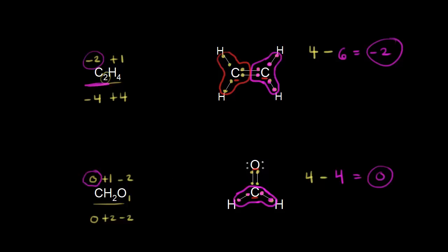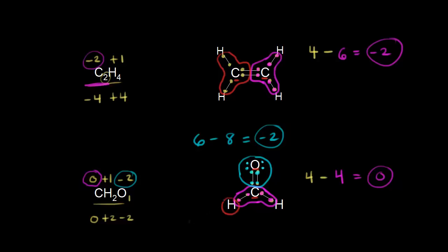Let's also verify oxygen's oxidation state. Oxygen should have six valence electrons because of its position on the periodic table. After accounting for electronegativity, oxygen is surrounded by eight electrons. So six minus eight gives an oxidation state of minus two for oxygen. For hydrogen: hydrogen should have one valence electron, but there are zero electrons around it because carbon is more electronegative, so one minus zero gives plus one — confirming our predictions. This formula works for other atoms too.